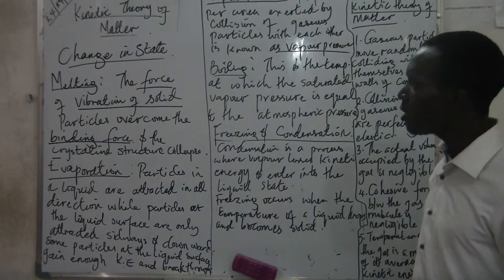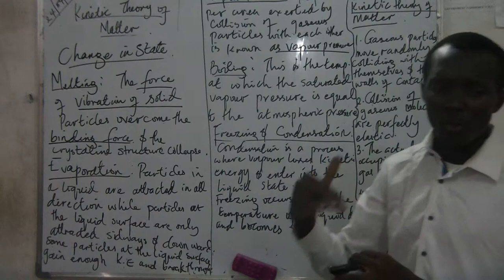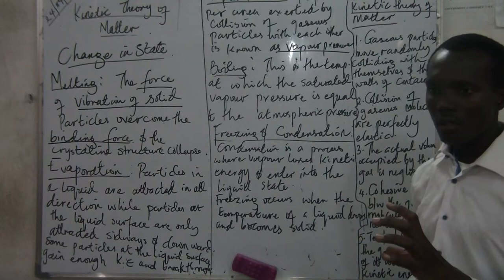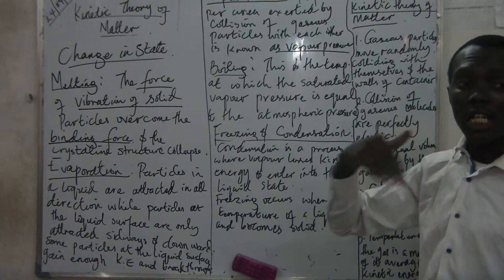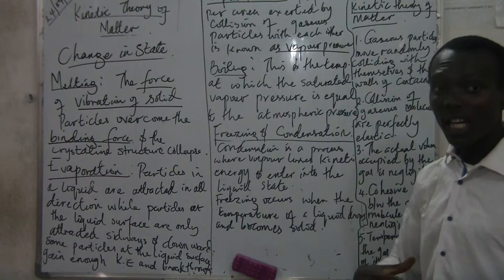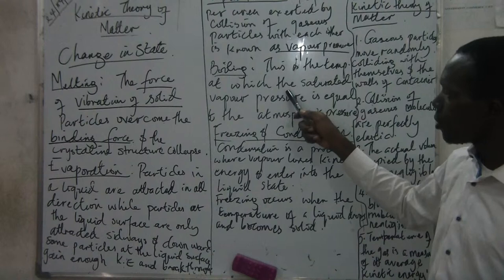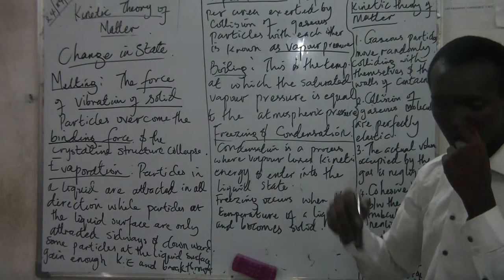When we talk about boiling, we are talking about the temperature at which the vapor pressure continues to increase until it becomes saturated — meaning we can no longer condense the liquid. It becomes saturated. Boiling is the temperature at which the saturated vapor pressure is equal to the atmospheric pressure.